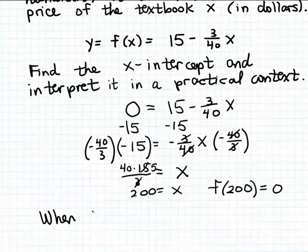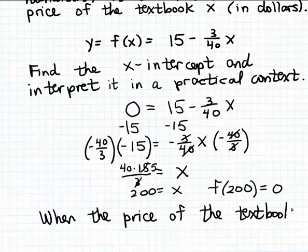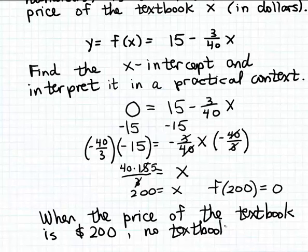When the price of the textbook is 200 dollars, the semester demand will be 0. Or in other words, no textbooks will be sold. So apparently, that price 200 is simply too high a price for this textbook. At that price, no consumer is going to be willing to buy that textbook.